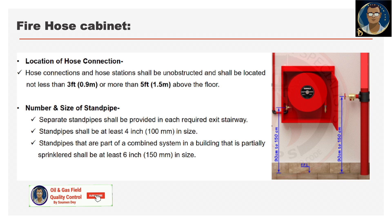Regarding number and sizes of standpipes: separate standpipes shall be provided in each required exit stairway. Standpipes shall be at least 4 inches in size. Standpipes that are part of a combined system in a building that is partially sprinklered shall be at least 6 inches or 150 mm in size.